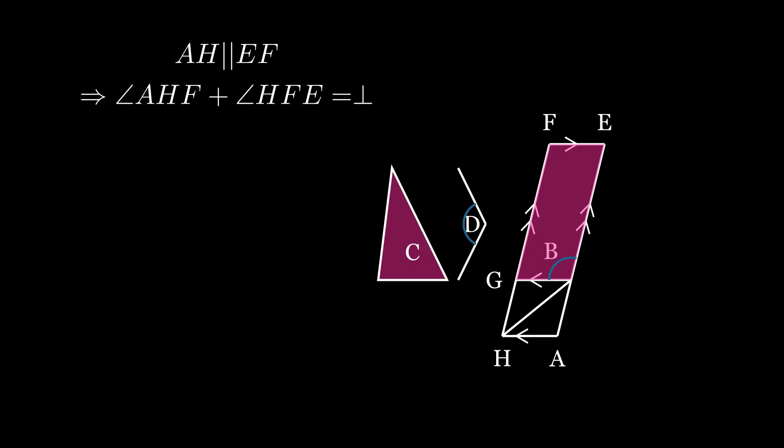We can then note that BHF and angle HFE are less than two right angles, which means when HB and FE are produced, they will meet somewhere, and we will say that they meet at K.